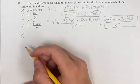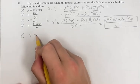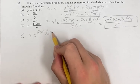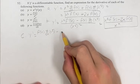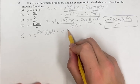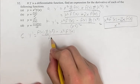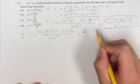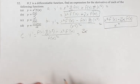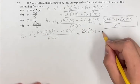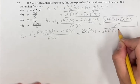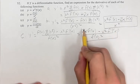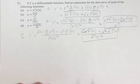For c, we have a similar thing, just a fraction that's flipped. So the derivative is the denominator times the derivative of the numerator, minus the numerator times the derivative of the denominator, over the denominator squared. So we have the derivative of x squared is 2x again — we don't have to calculate it twice — times f of x, minus x squared times the derivative of f, over f of x squared. So that's c.